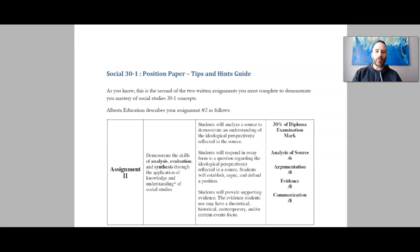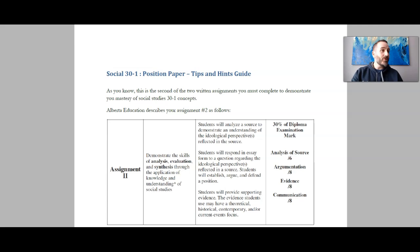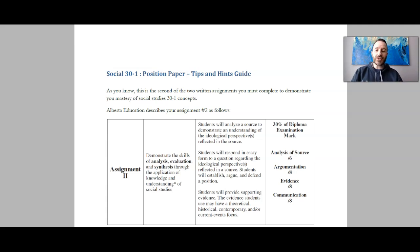Students will provide supporting evidence. The evidence may be theoretical, historical, contemporary, and or current events focused. One thing I want you to be sure of as students in Social 30: you can use case studies from Social 9, Social 10, Social 11. You can use case studies from historical documentaries that you've watched, from books that have evidence which you think furthers your position. Any real evidence that you think furthers your position is totally fair game. You're not handcuffed to only using Social 30 evidence.